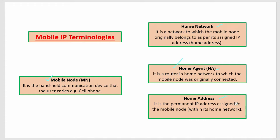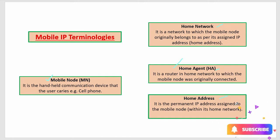Home Address is the permanent IP address assigned to the mobile node. For example, if Shivajinagar is the exact position, then home network is Shivajinagar — that is where we get the permanent IP address. The mobile node is connected to the home agent, and multiple home agents can be connected towards the home network.